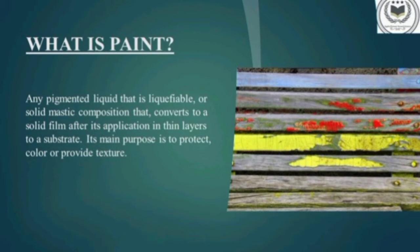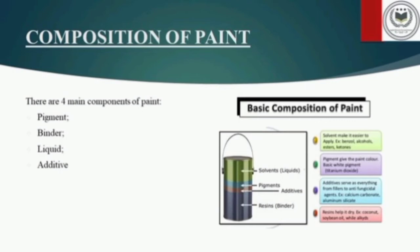Paint can be applied as a protective or decorative coating to various surfaces and materials. Moving on to the composition of paint, it is comprised of four components: pigment, binder, liquid, and additive. Pigment provides color and opacity while binders work to bind the pigment together and create the paint film. Solvents are liquids that are suspended in the ingredients and allow you to place the paint on surfaces, and additives provide specific paint properties such as mildew resistance.